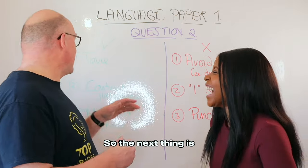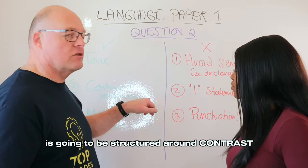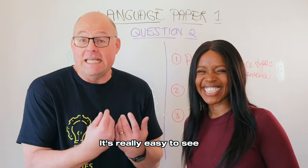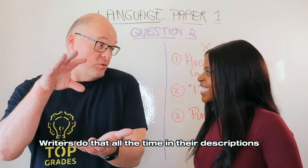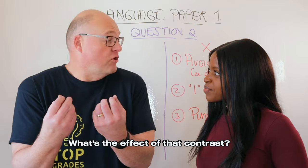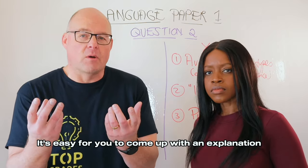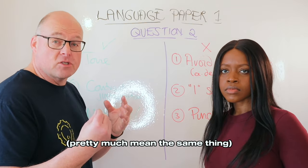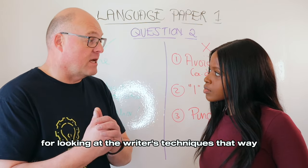The next thing is that every single text you ever read is going to be structured around contrast. Writers are always trying to contrast things in their descriptions. You then ask: what's the effect of that contrast? Why is the writer showing us that difference? That's easy to come up with an explanation for. Using the words contrast and juxtaposition — which pretty much mean the same thing — you're going to get good marks for looking at the writer's techniques that way.